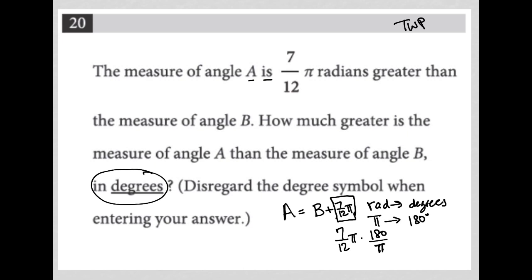This allows me to cross out my pis and leaves me with just my numbers - 7 over 12 times 180 over 1, basically.